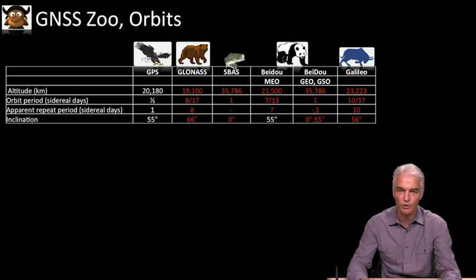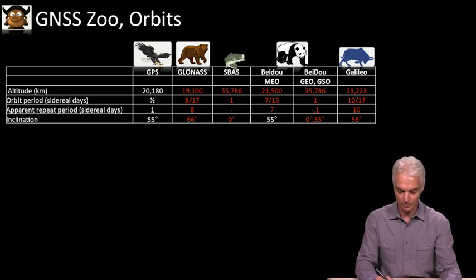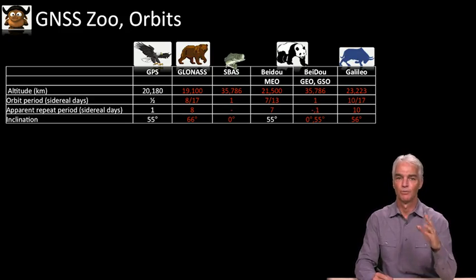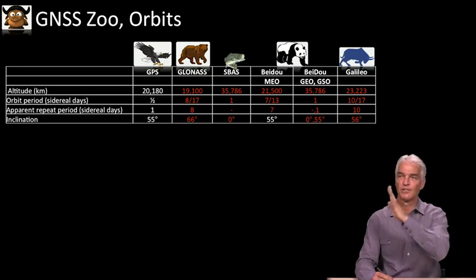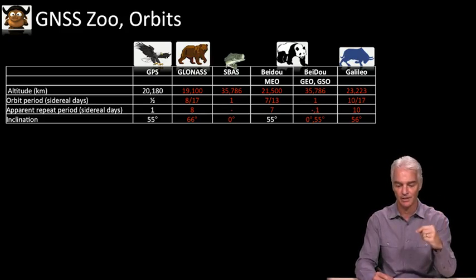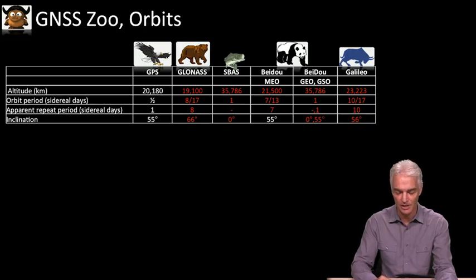The first thing we'll look at is orbits, because we've just looked at that in some detail over the last few videos. What you'll see here is a summary of everything from the last few videos, such as what is the altitude, what is the orbital period, and what's the apparent repeat period — meaning the repeat period of when the satellite will be in the same place in the sky as viewed by a stationary observer on the Earth.